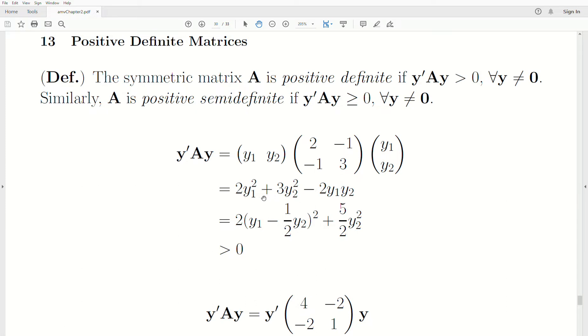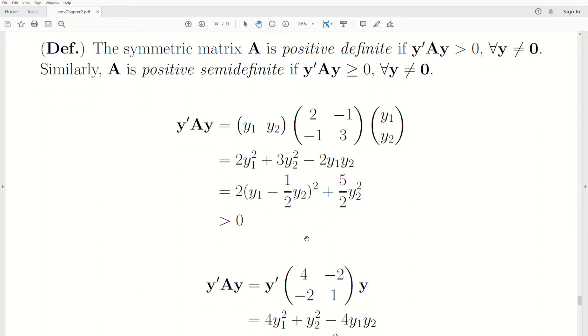Then notice that no matter what values of y1 and y2 we put in, it's always going to be strictly greater than 0. Now remember, this doesn't include the 0 vector. If you put 0 in here, of course it's 0, because if you multiply anything by 0, you get 0. But that's it. So A is positive definite.